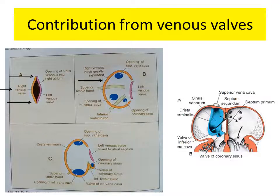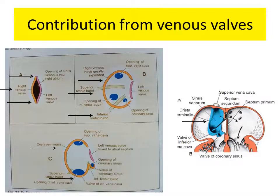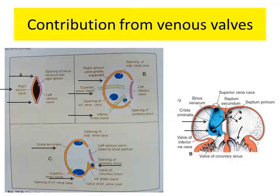The right venous valve overgrows the left, and two limbic bands appear — the superior and the inferior — dividing the right venous valve into three parts. The portion above the superior limbic band forms the crista terminalis. The portion between the superior and the inferior limbic band forms the valve of the inferior vena cava. The portion below the inferior limbic band forms the valve of the coronary sinus.